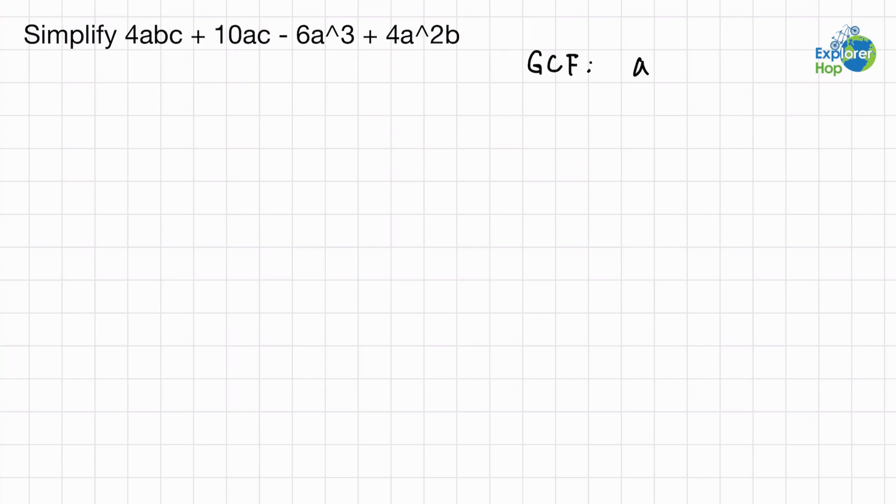Another thing that every polynomial is able to divide out of is 2. 4 is divisible by 2, 10 and 6 are all divisible by 2. Therefore, our greatest common factor is 2a, because we see that b is not in each of these polynomials, and c is not found in each of these polynomials.